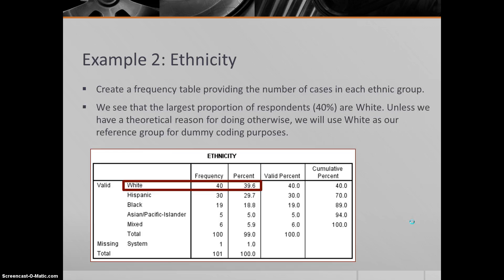Next, we'll create a frequency table. We can look at the percentages in each group. We can see that the highest proportion of these respondents are white—about 40 of them, or roughly 40%, are white, about 30% Hispanic, and so forth. So unless we have a different theoretical reason for doing otherwise, we're going to use white as our reference group for dummy coding purposes because it's the largest group. If we had 40% Hispanics and 30% white, we'd switch that around and probably use them as our reference group.